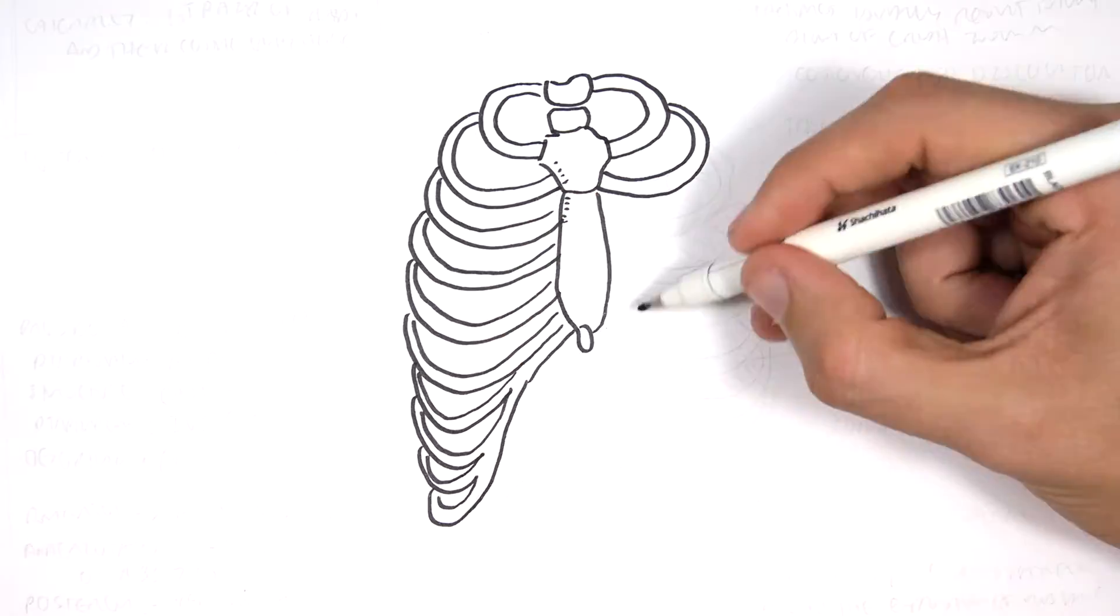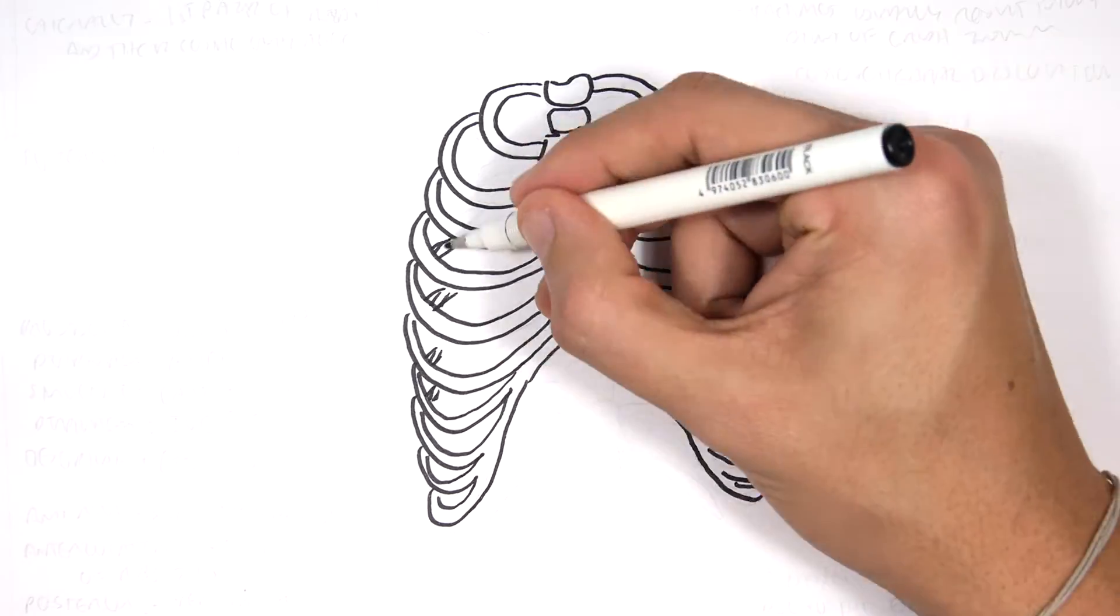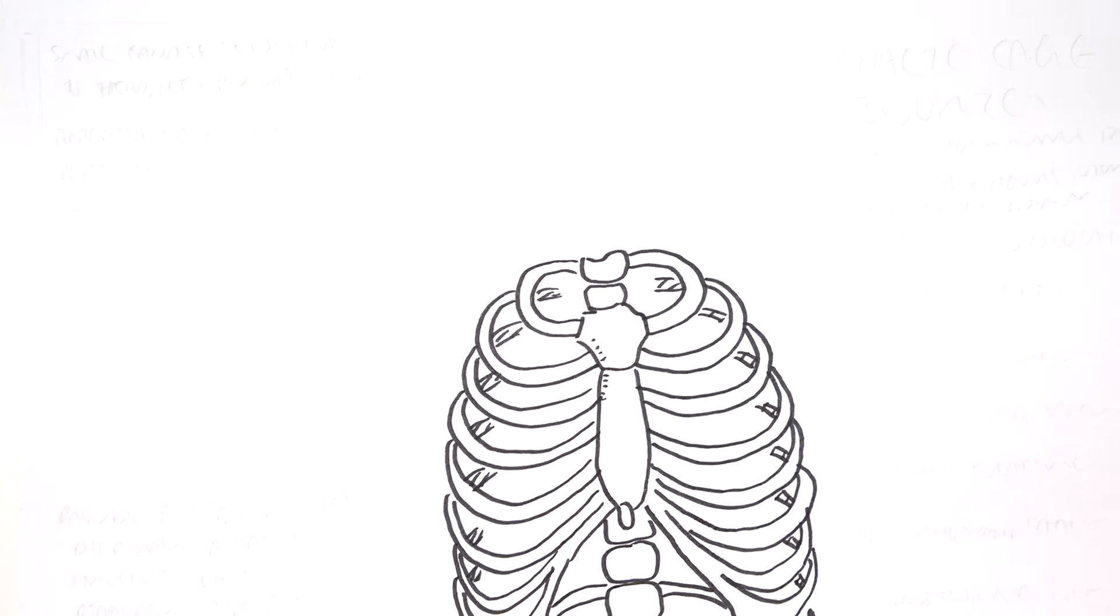Hello, in this video we're looking at the anatomy of the thorax, and we will look at fractures as well as nerve blocks, so more from a clinical aspect.